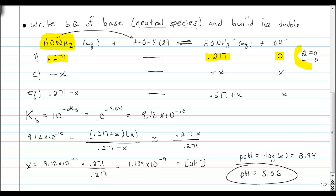And because of this, Q is equal to zero, and we're going to shift to the right. You need to keep writing that down and showing that work. If it's going to shift to the right then, we're going to use up some of the hydroxyl amine, make some of this cation here, make some hydroxide, and then we just add those up to get the 0.271 minus x, the 0.217 plus x, and the x.